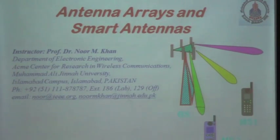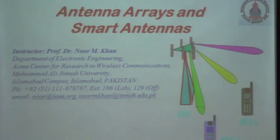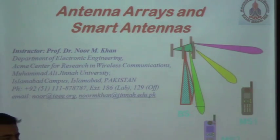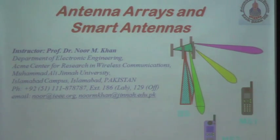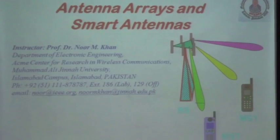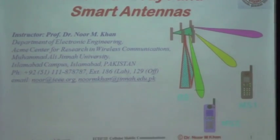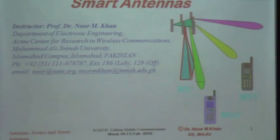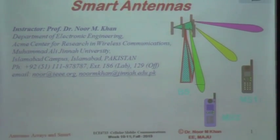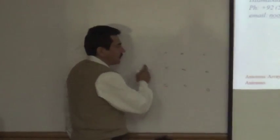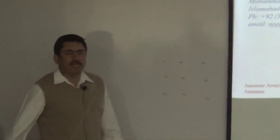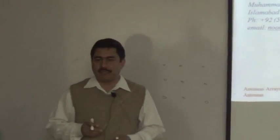If antenna elements are arranged in a line, that would be a linear antenna array. If those are arranged in a circle, those would be a circular antenna array. And if those elements are arranged in a two-dimensional plane, then it would be a planar antenna array.